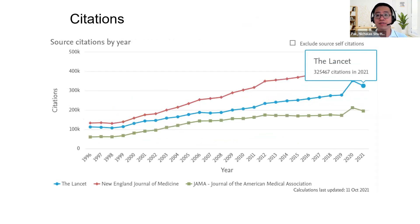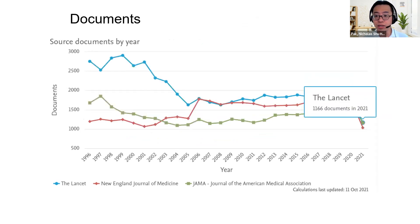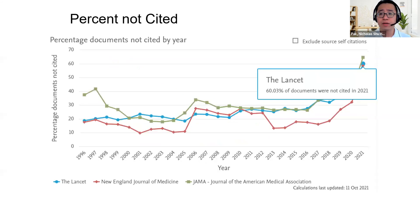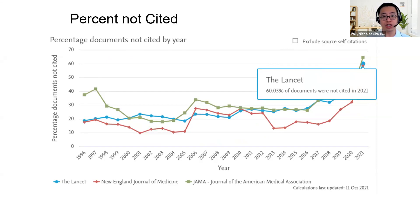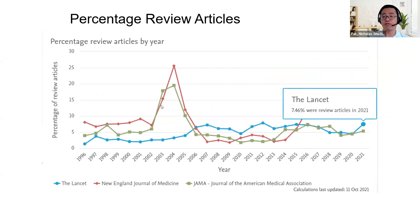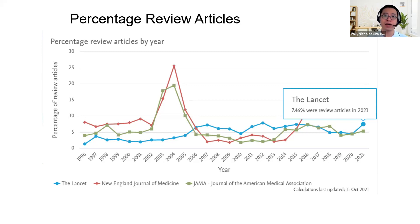If you want to talk about raw citation counts, New England Journal of Medicine has the most citations. All three journals publish more or less equivalent numbers of source documents per year. Another metric I really like is what we call percent not cited — it shows what percentage of a journal's work is not being cited or read by anyone. If you're an early career researcher, you probably want to publish in a journal where the percent not cited is low. Also, review articles tend to generate a higher number of citation counts, so don't be surprised if a journal with a high percentage of review articles generates more citations.